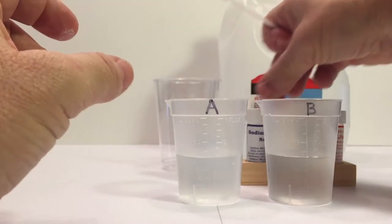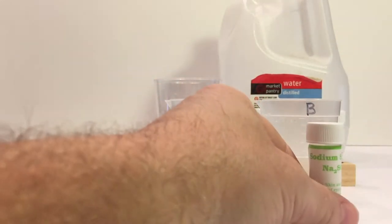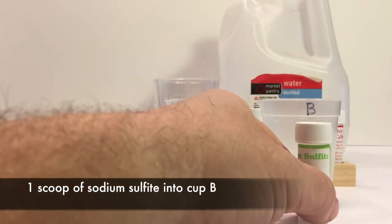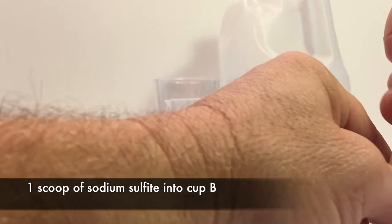And then, like I said, there's 40 milliliters of distilled water in each cup. Now, for cup B, I'm going to add one scoop of sodium sulfate and four scoops of citric acid.